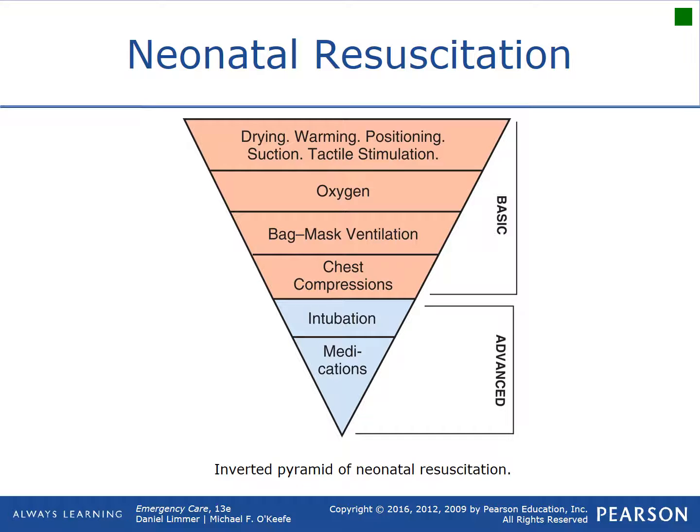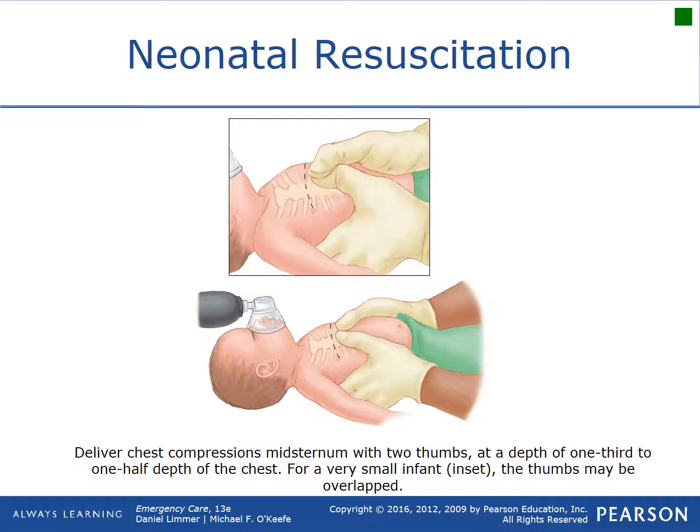The neonatal resuscitation triangle starts with initial steps: drying, warming, positioning, ensuring airway is open, suctioning, and tactile stimulation. Then provide blow-by oxygen to see if that perks the baby up. If not, provide bag-mask ventilation with positive pressure. If that's not working, do chest compressions. If the baby comes out unresponsive, pulseless, and apneic, go straight to compressions and CPR. For compressions, use the thumb-encircling technique with two rescuers — fingers support the elevated back while thumbs compress the lower half of the breastbone while the partner provides positive pressure ventilation.